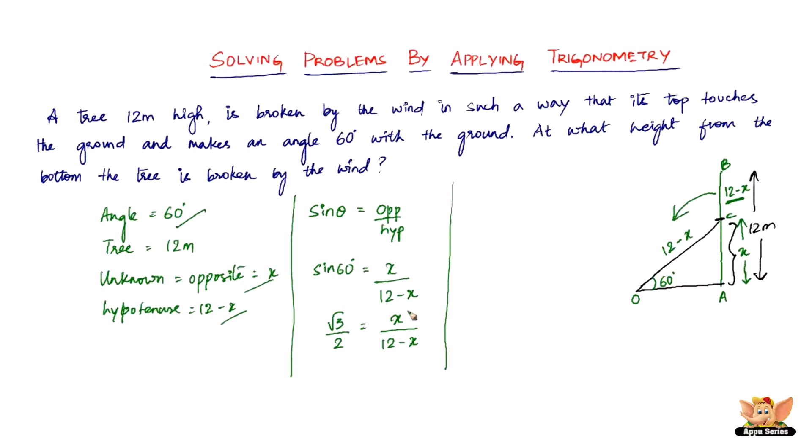So we've got root 3 by 2 equals, now cross-multiplied, we've got root 3 multiplied by 12 minus X, equated to 2 multiplied by X. So you've got 12 times root 3 minus X times root 3 equals 2X. So now let's group. We've got 12 root 3 equals 2X plus X root 3. Another grouping here, take out X as common and then you've got 2 plus root 3. So X equals 12 root 3 over 2 plus root 3.